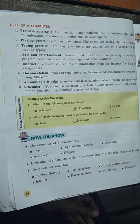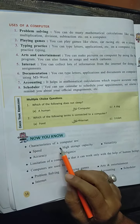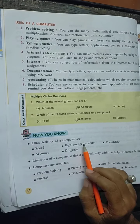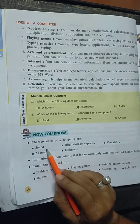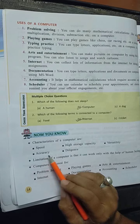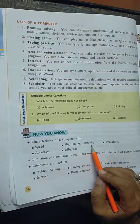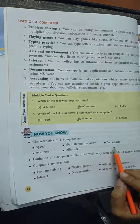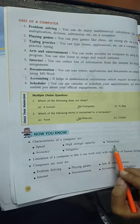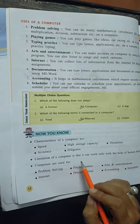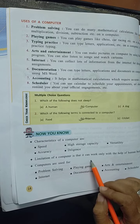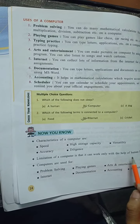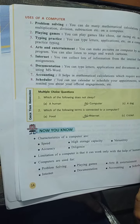Now let's recap. The characteristics of a computer are: speed, accuracy, high storage capacity, diligence, and versatility. The limitation of a computer is that it can work only with the help of human beings.